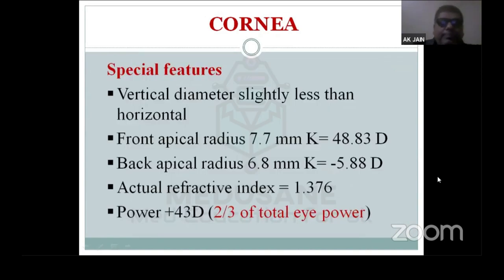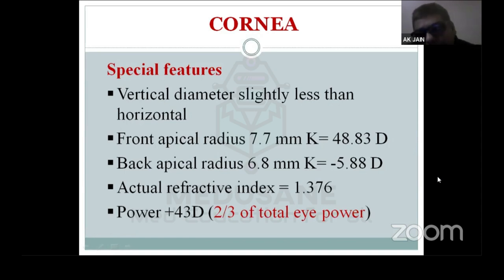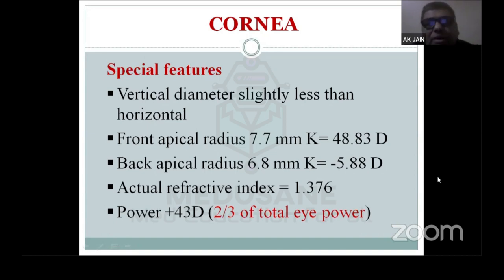First, the cornea — the anterior-most part of the eyeball. The corneal vertical diameter is slightly less than the horizontal diameter, because the pressure of the upper eyelid squeezes the eyeball vertically. The vertical diameter is around 11–11.5 mm, whereas the horizontal diameter is around 11.5–12 mm. The front apical radius is 7.7 mm, equating to a keratometry curvature value of 48.83 diopters.